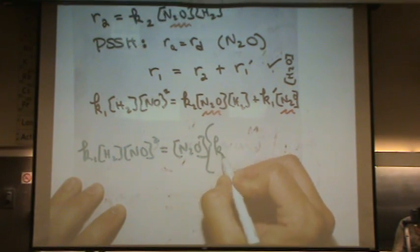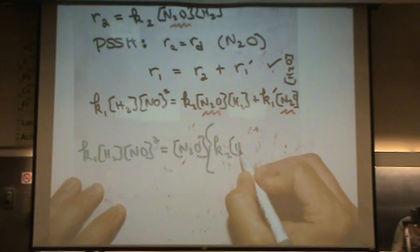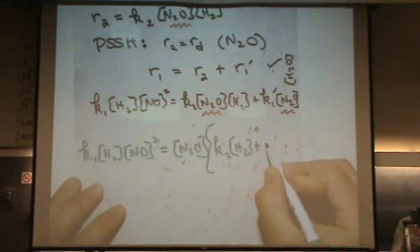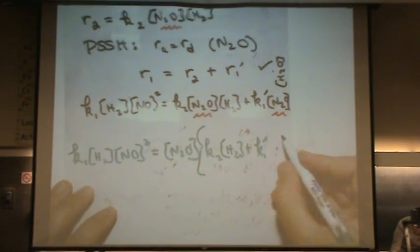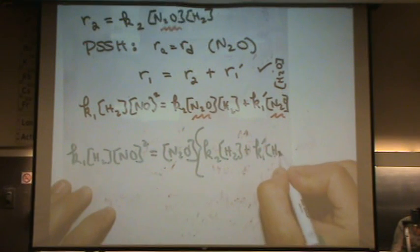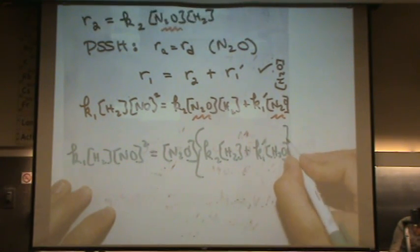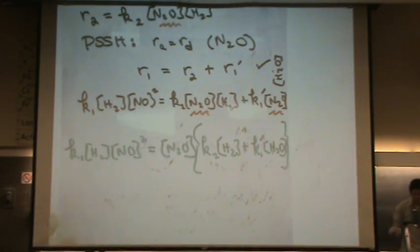I'm going to factor out the N2O out of this right hand side. If you do that, you'll get K2 times H2 plus K1 prime times H2O. Okay, so I just factored it out. Now I'm going to divide through.